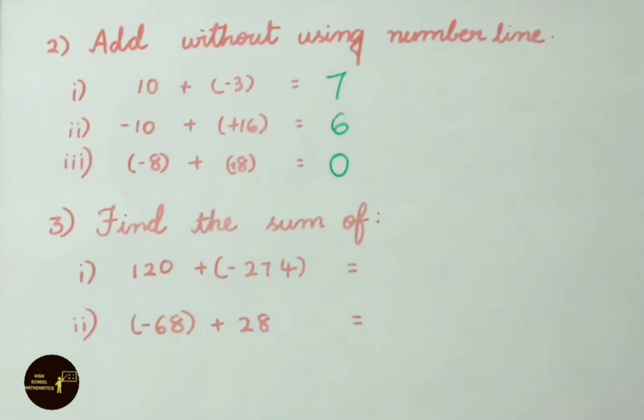See the third question, find the sum of. See the first one, 120 plus minus 274. Here opposite sign is there. We have to do subtraction. 274 minus 120. 4 minus 0, 4. 7 minus 2, 5. 2 minus 1, 1. Here 274 is greatest. Its sign is minus. So the answer is minus 154.